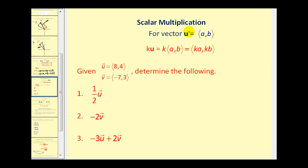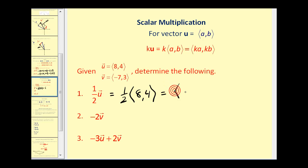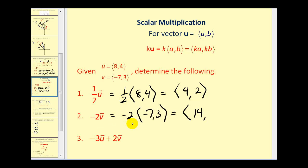Now let's take a look at scalar multiplication — it'll probably remind you of distribution. If you have K times vector U, you just multiply each component by the scalar K. So one-half times vector U is one-half times the vector ⟨8, 4⟩, giving us ⟨4, 2⟩. Negative 2 times vector V would give us the vector with horizontal component 14 and vertical component negative 6.